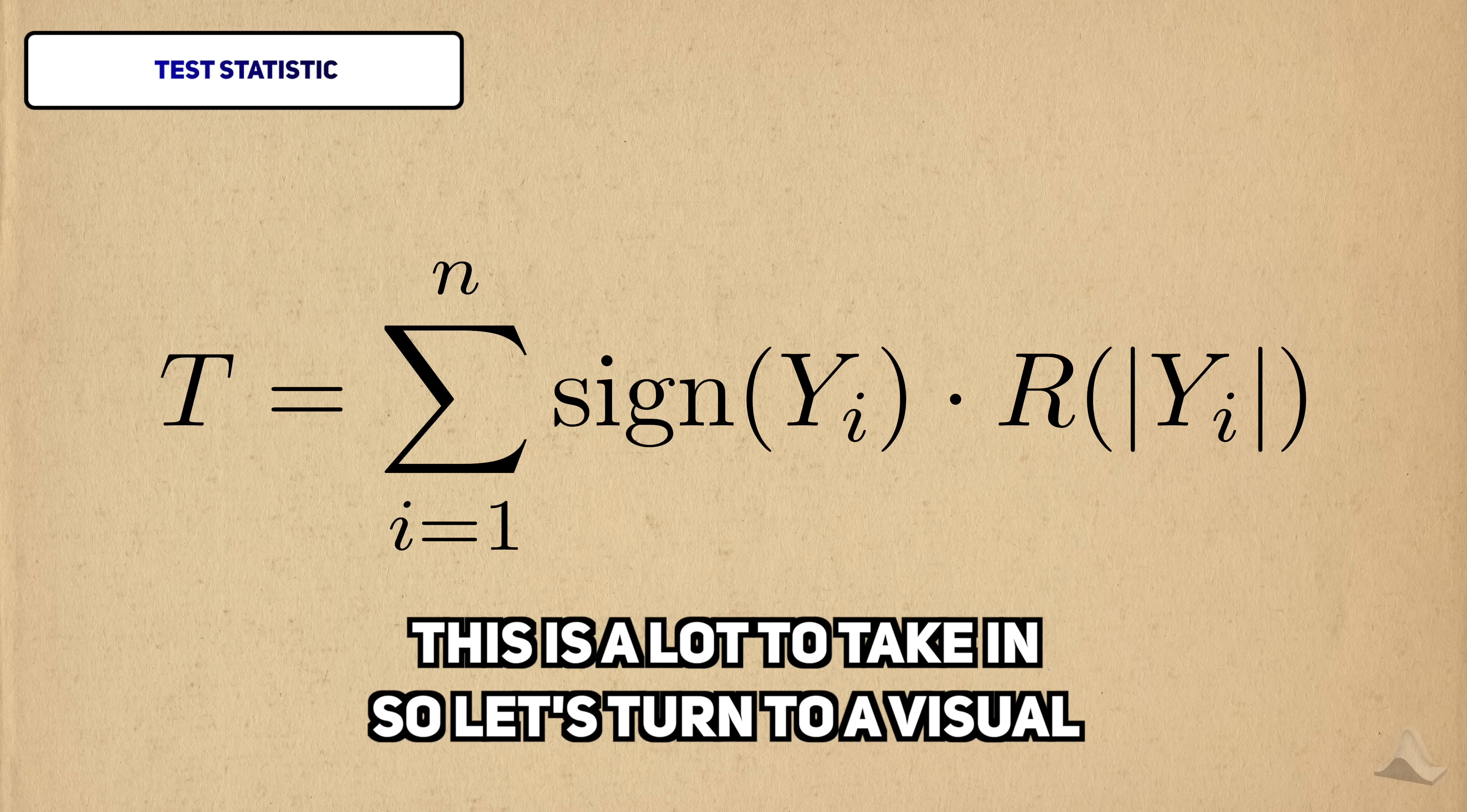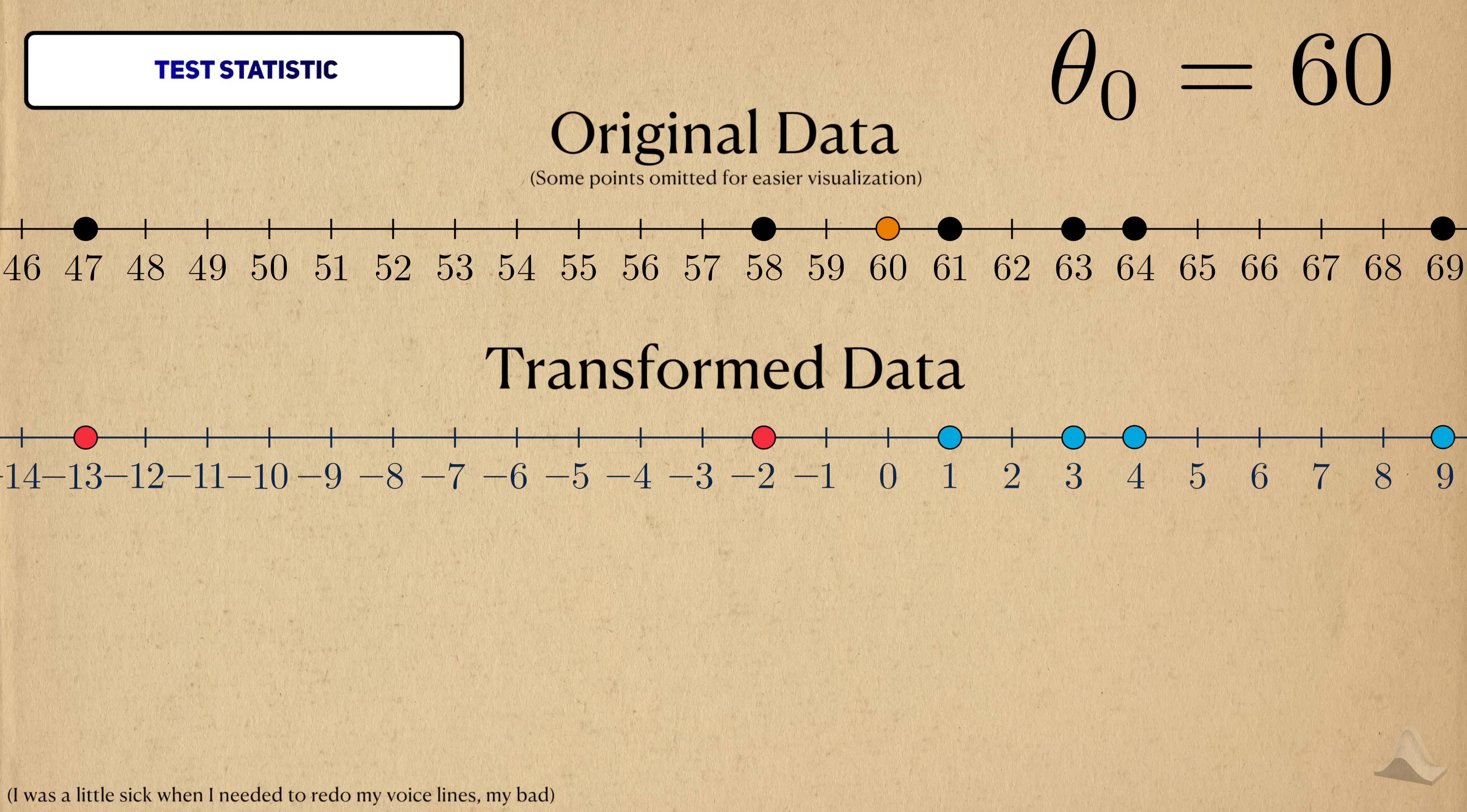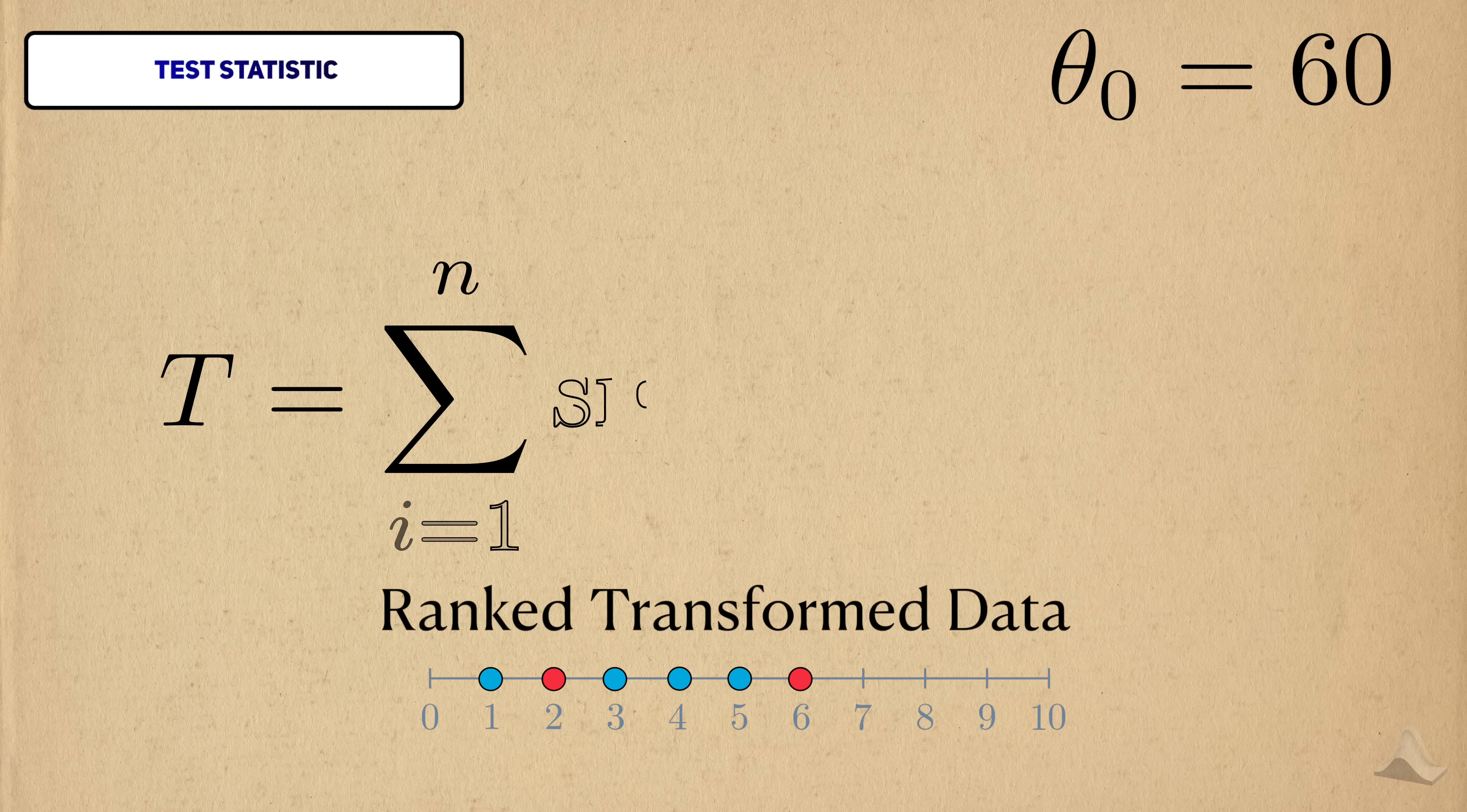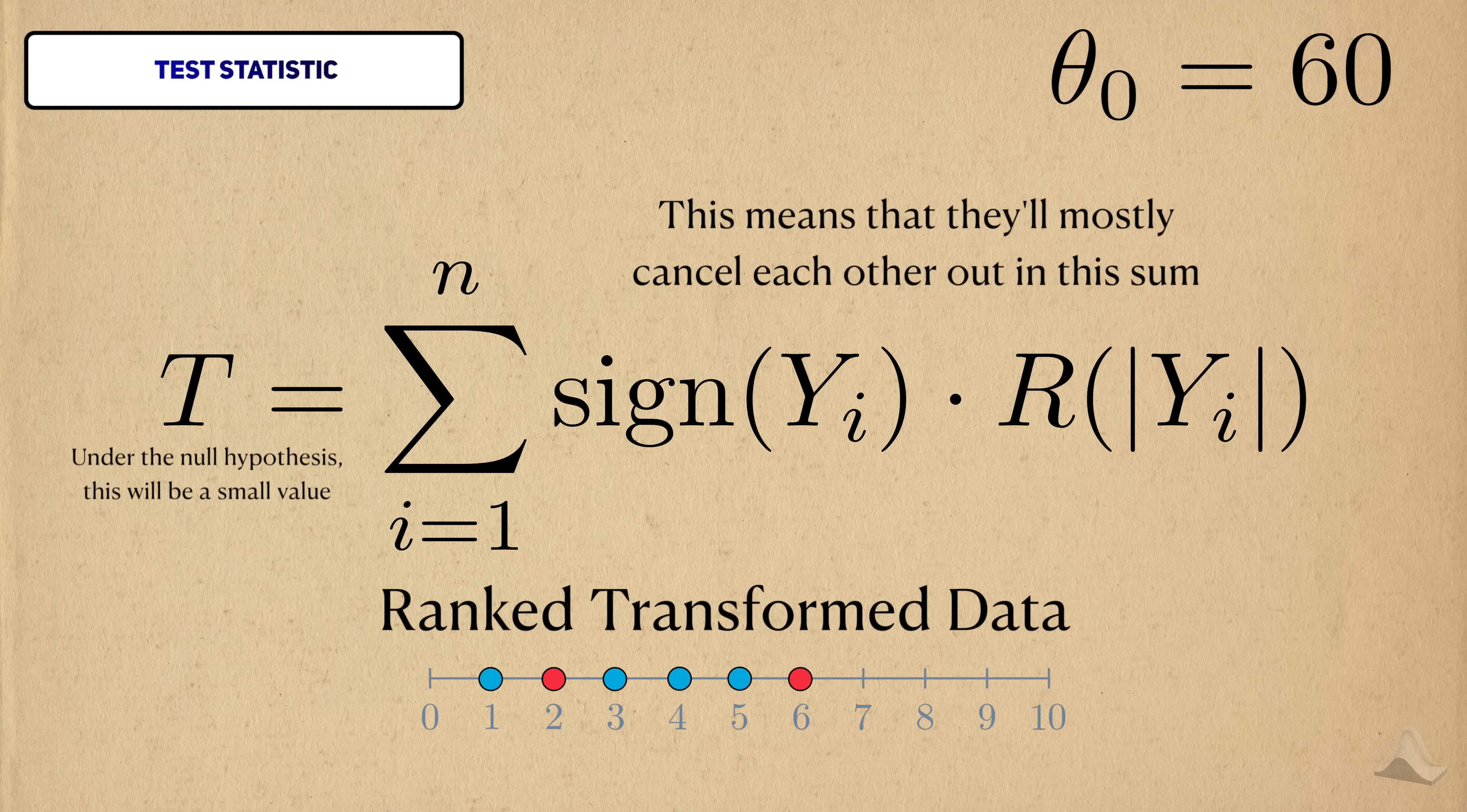This is a lot to take in, so let's look at a visual to build our intuition a bit better. Here's a few of my data points shown on the real line. Let's say that the null hypothesis is true, and theta naught is pretty close to the true center. If that's the case, then approximately half the transformed data will be negative, and the other will be positive. After we take the absolute value of the data and rank them, it'll look something like this. Then the rankings will be evenly distributed between the negative and positive points. The ranks of a negative and positive observation will mostly cancel each other out. So under the null hypothesis, the test statistic will be pretty low, and not provide enough evidence for us to reject the null hypothesis.